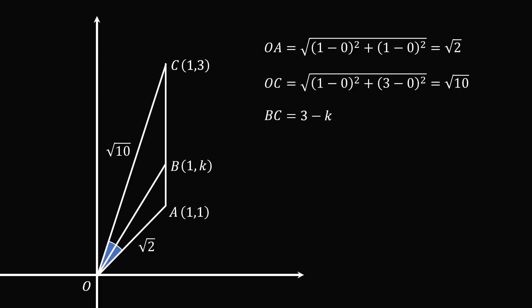Then, BC is equal to 3 minus k, and AB is equal to k minus 1. Let's label these line segments.